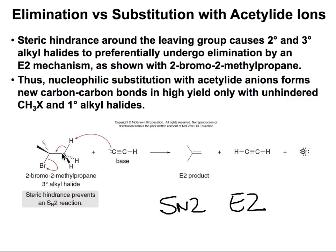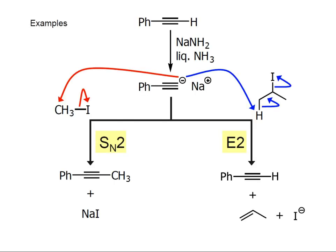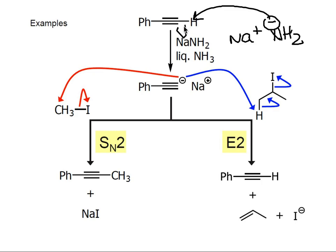Here's another example: we have a terminal triple bond, treated with Na+ NH2-. The first step is the acid-base deprotonation giving us the acetylide ion. With a primary alkyl halide, it does an SN2 reaction. But with a secondary or tertiary alkyl halide, instead of acting as a nucleophile, the acetylide will act as a base, and we get an elimination reaction — giving us a double bond.